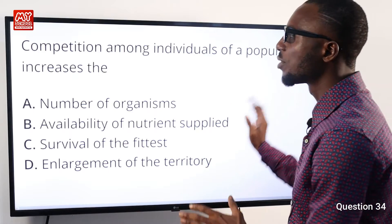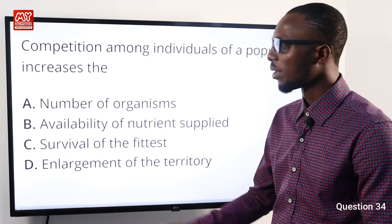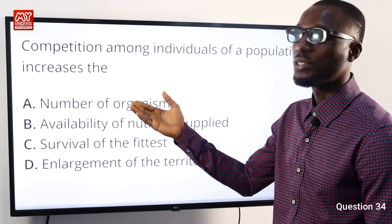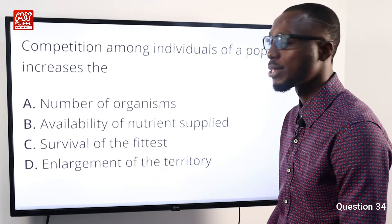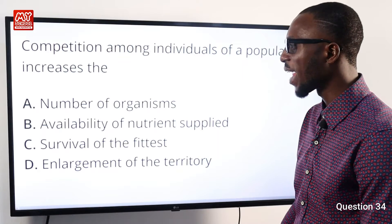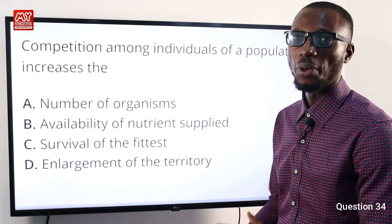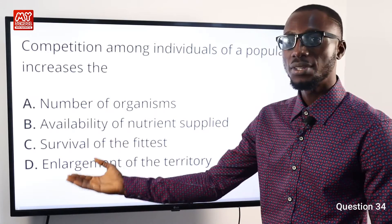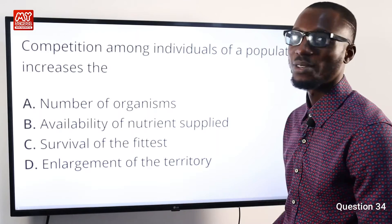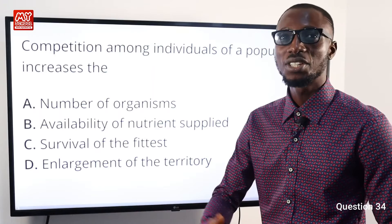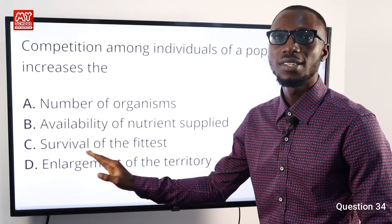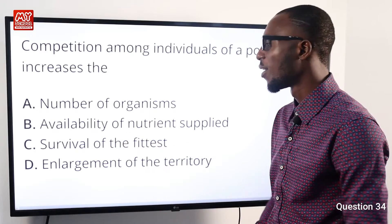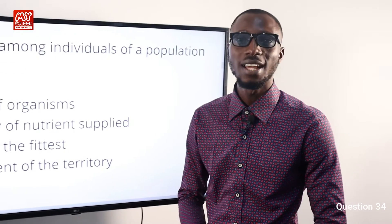Question 34: Competition among individuals of a population — option A (increases number of organisms) is no; option B (availability of nutrients) is no, since increased population drops available nutrients; option C implies survival of the fittest, where only the stronger dominates the weaker; option D (enlargement of territory) is no, as the weaker ones are chased out. So option C is very correct.